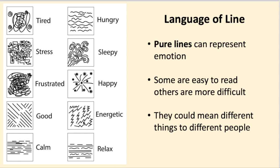These ones over here, they may be energetic or they may be angry lines. Is this happy? It could be an explosion. It could be powerful. This could be sleepy or it could be really energetic, hungry or calm. Quite often calm lines are horizontal because we think of landscapes and the sea. There aren't any real rules to this. Pure lines can represent emotion. Some are easy to read and others are more difficult. They could mean different things to different people.